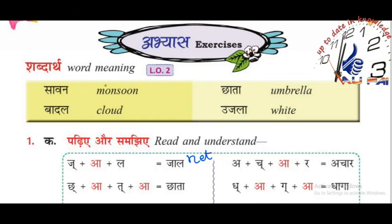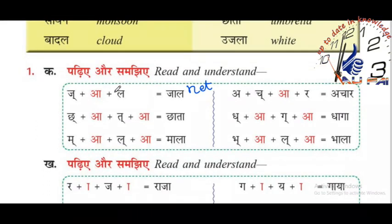Chatha — chatha means umbrella. Mala — mala means garland. Achar — achar means pickle. We already know 'char,' which means four; we add the 'aa' matra and char becomes achar, meaning pickle.